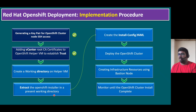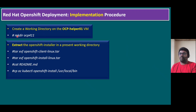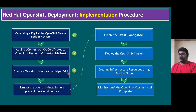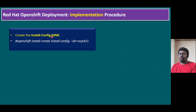These two steps are completed. We highlighted the commands: mkdir directory created, tar files extracted, we reviewed the README file, and copied to /usr/local/bin location. The third and fourth steps are also completed. Now the fifth step is to create the install-config.yaml file. The command to do so is: openshift-install create install-config, with the same file name, space, and --dir ocp411.